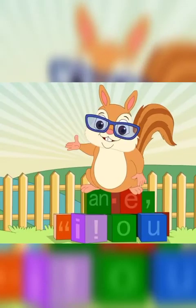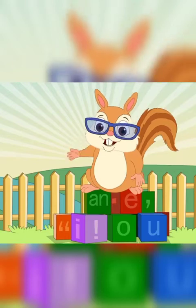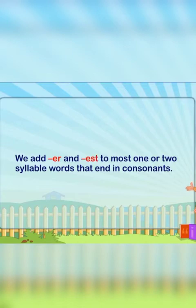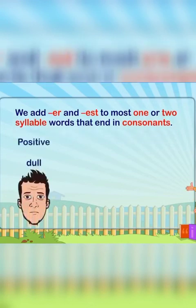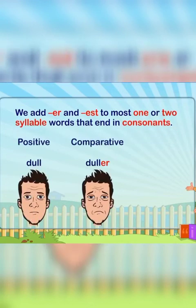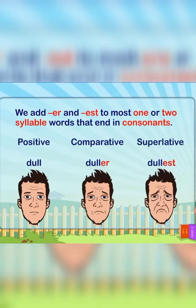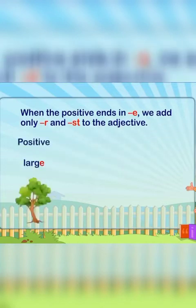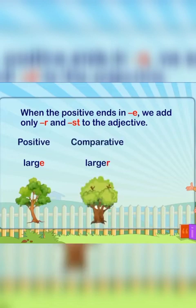In order to form comparative and superlative degrees of adjectives, remember the following rules. We add -er and -est to most one or two syllable words that end in consonants. When the positive ends in -e, we add only -er and -est to the adjective. For example: large, larger, largest.